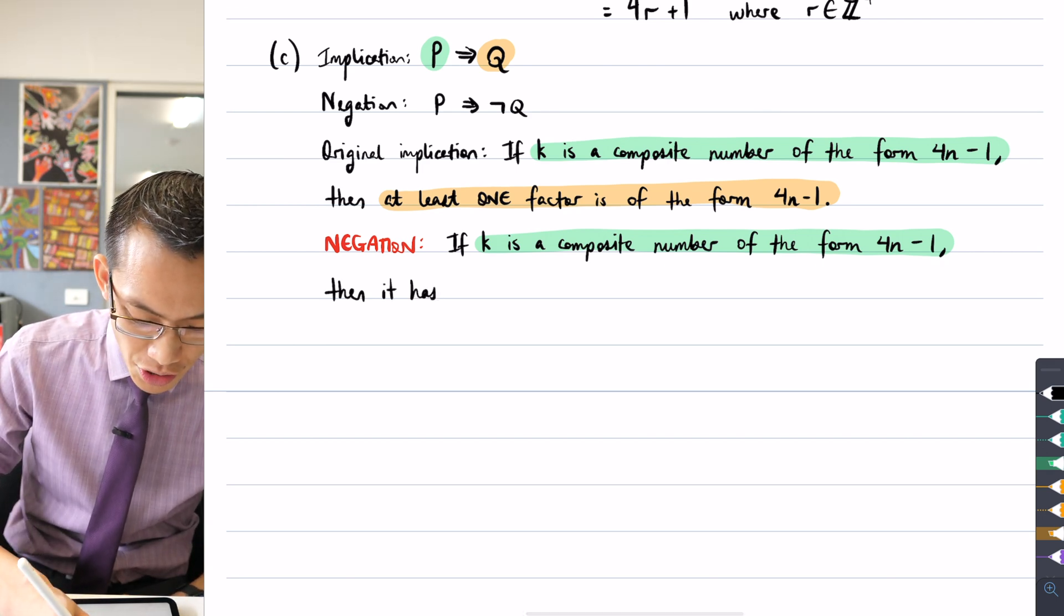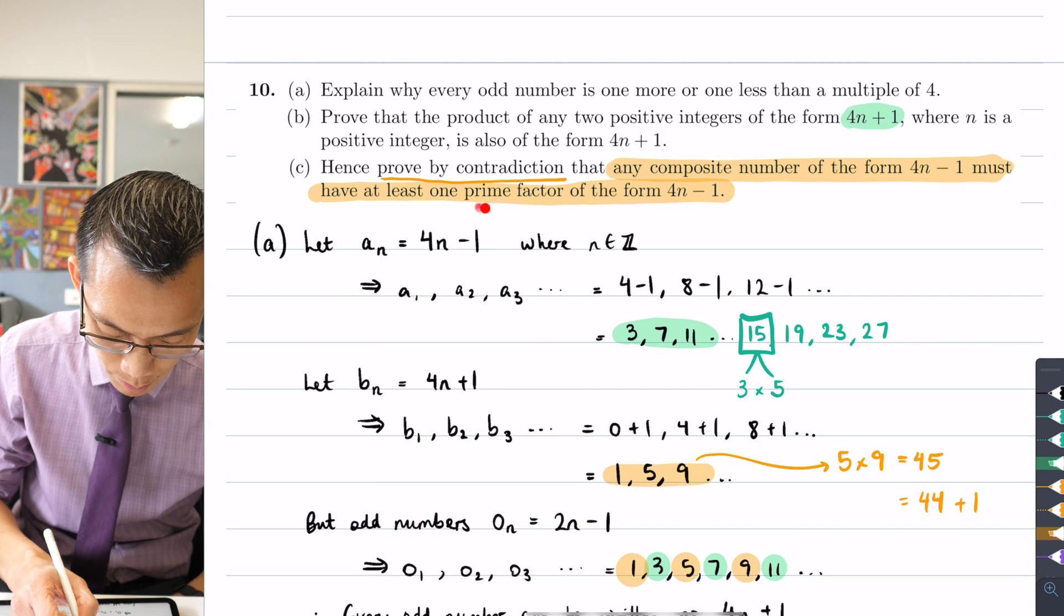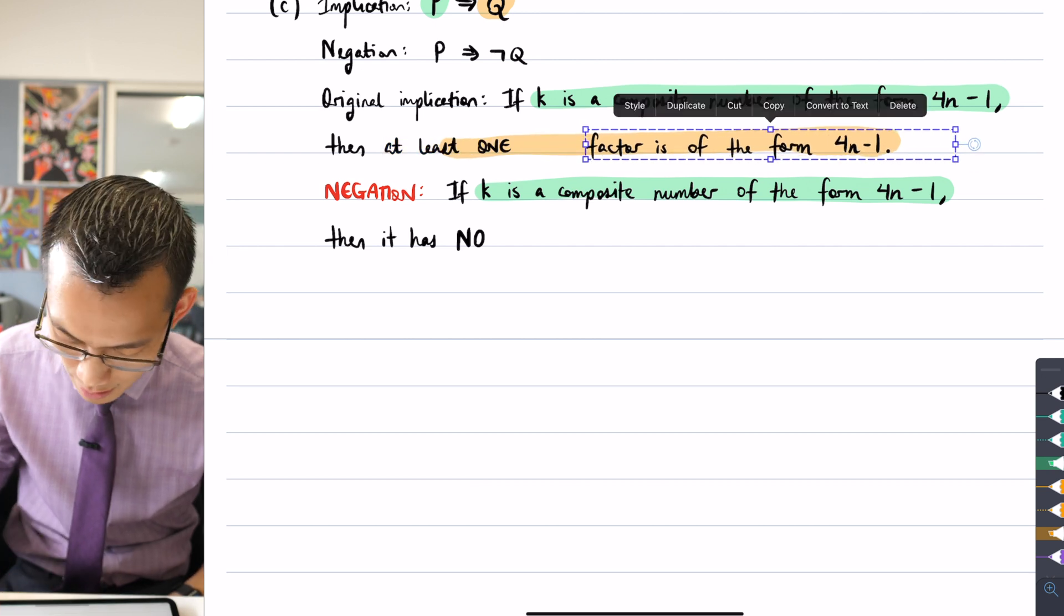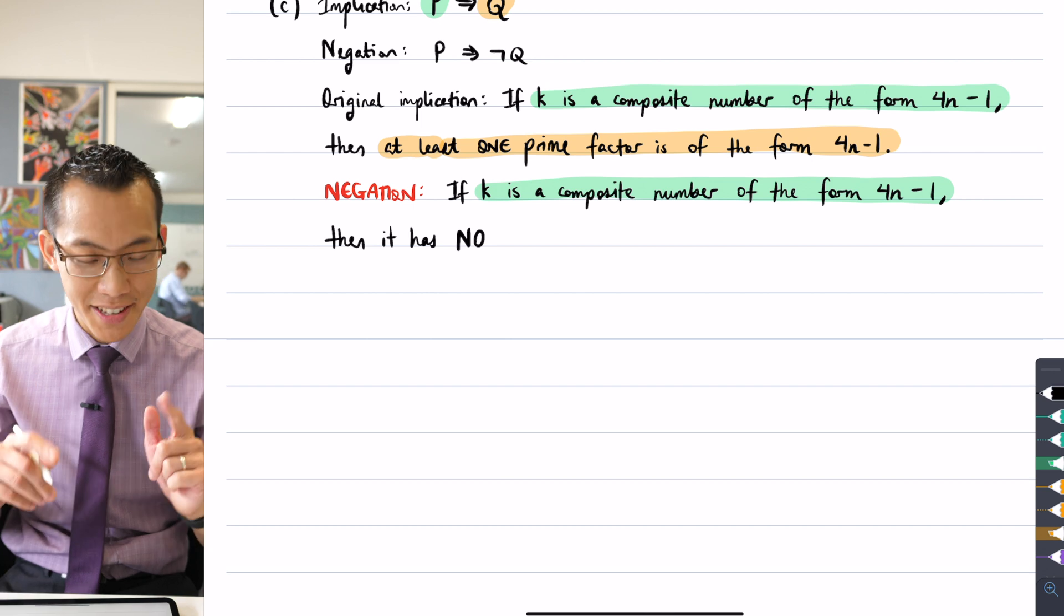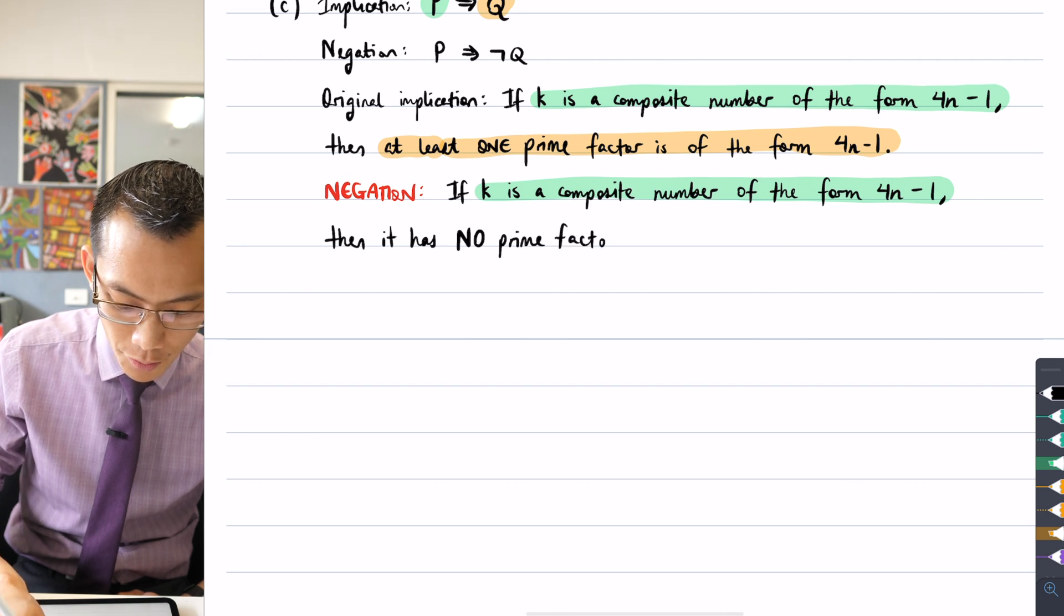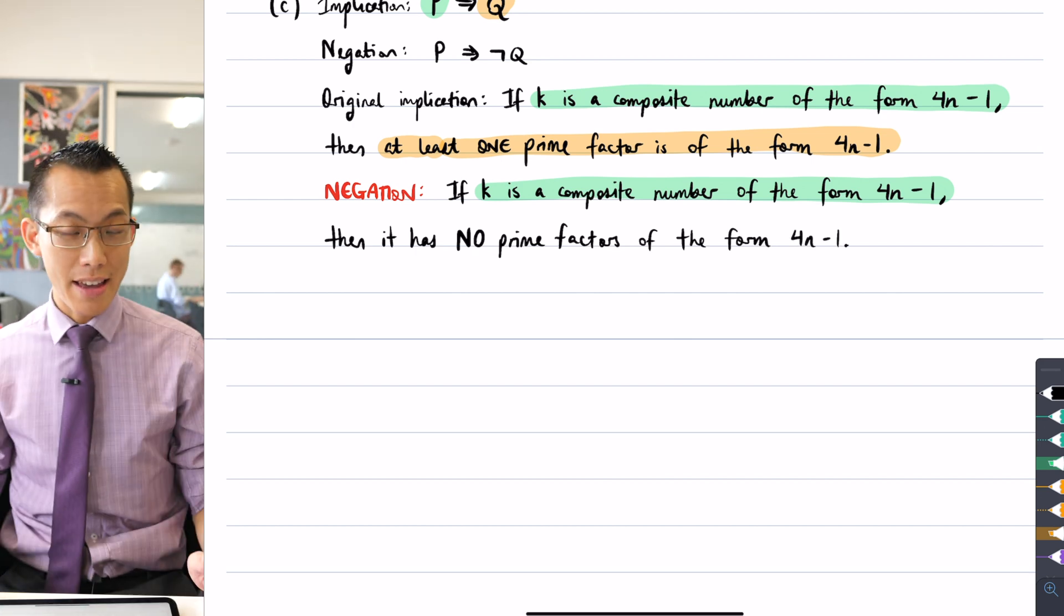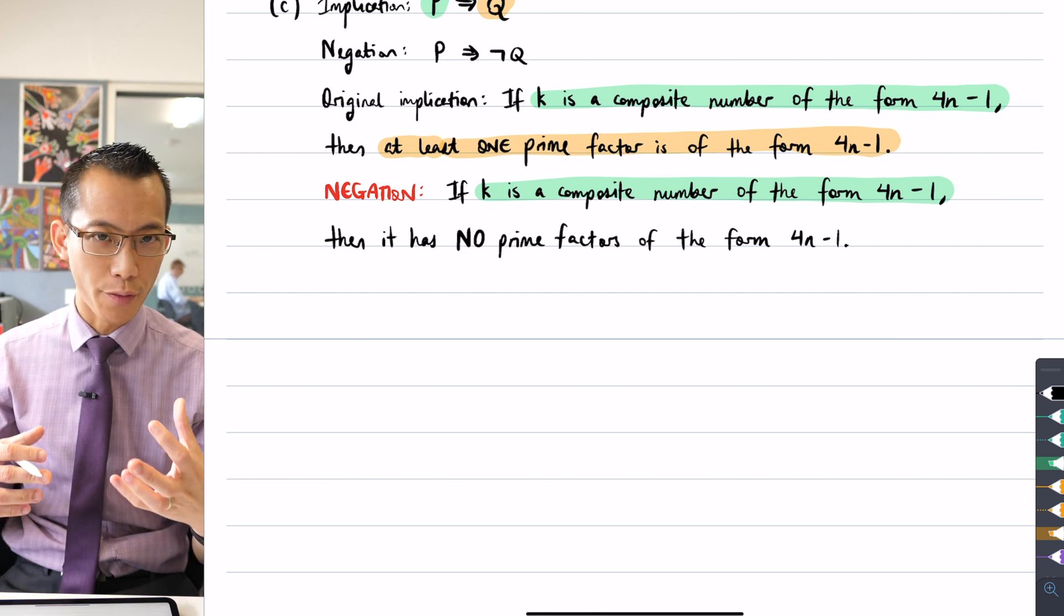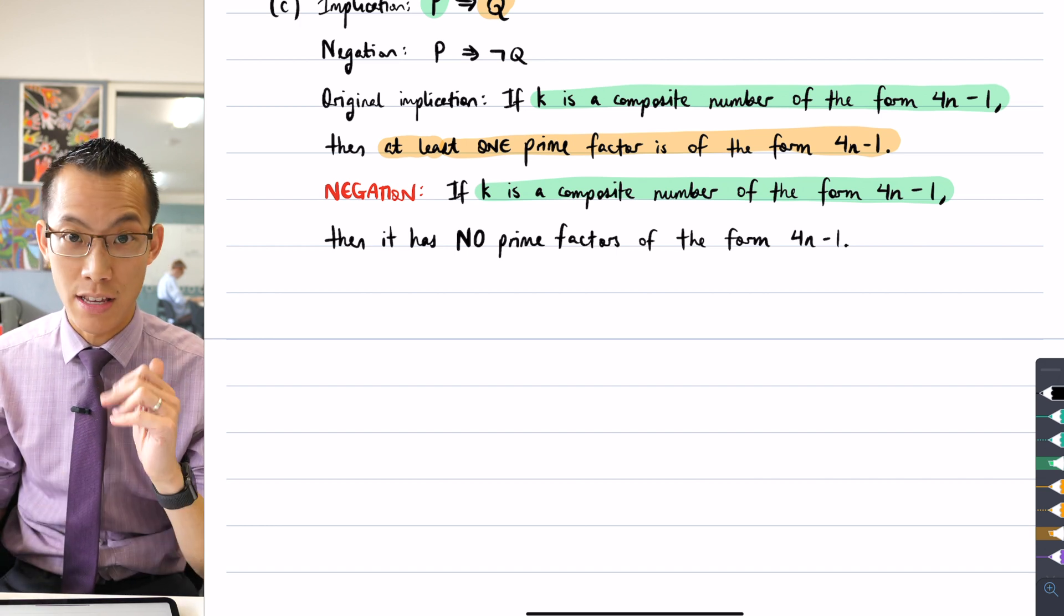If you want to think about this back in the language of probability, this is the complementary event. Either at least one factor is in this form or none of the factors are in this form. So therefore, that's the way I'm going to say my negation. I'm going to say then it has no prime factors of the form 4n minus 1. Okay, so there is the negation. This is what I'm going to try and work with and because this is a proof by contradiction, what I'm hoping is that once I sort of fiddle with this negation, it's going to lead me to something that's contradictory and then I can say the negation is false, original implication is true. That's the road map.